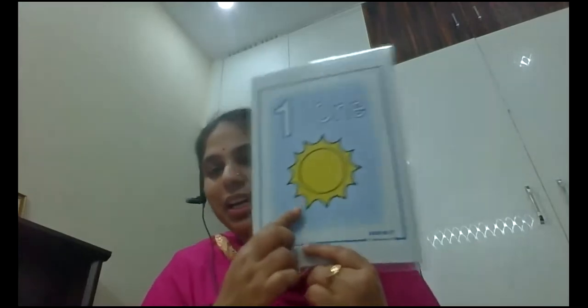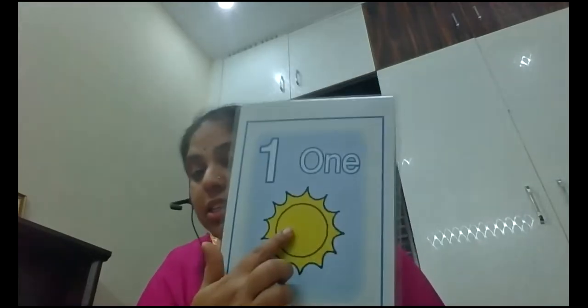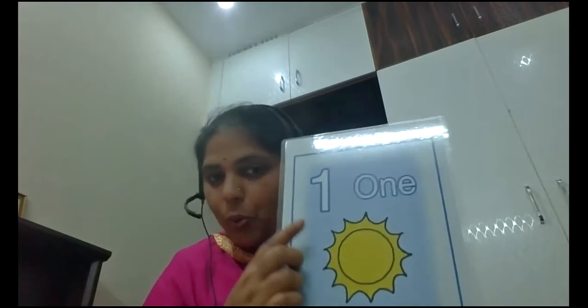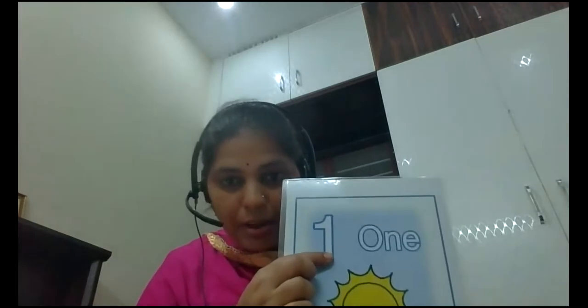What number is this? One. Okay, how many suns are here? You can count, right? One sun. How many suns are here? Only one sun. Okay children, count how many suns are here — one sun. What number is this? One. What number is this? Repeat, children — one. Very good.